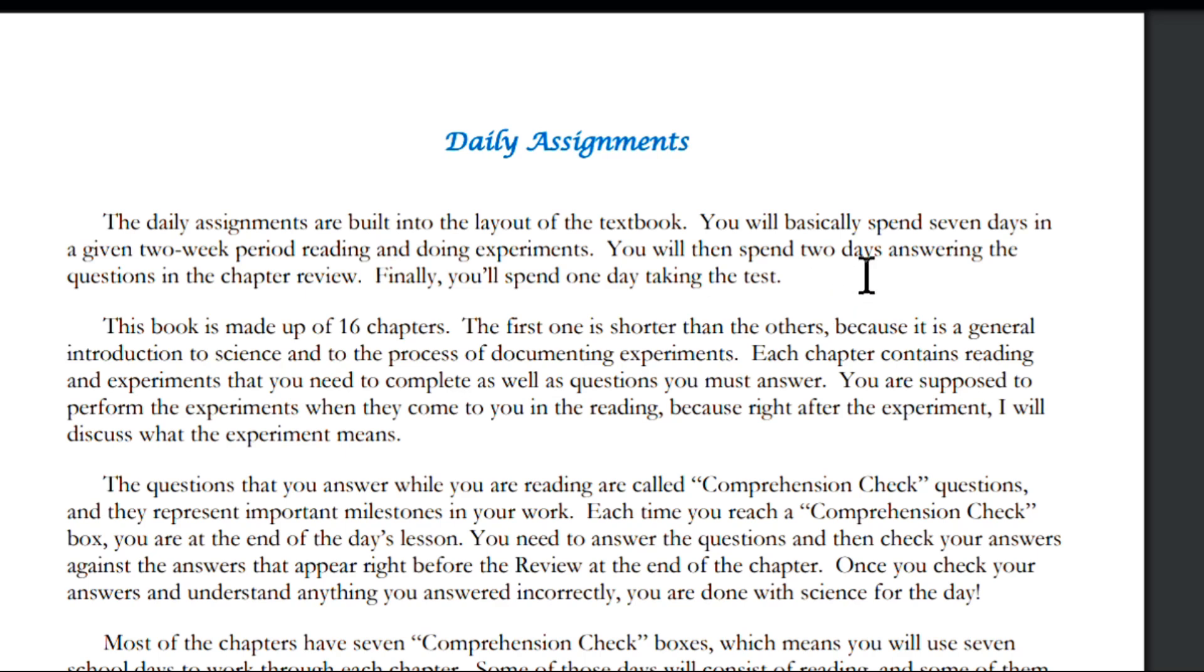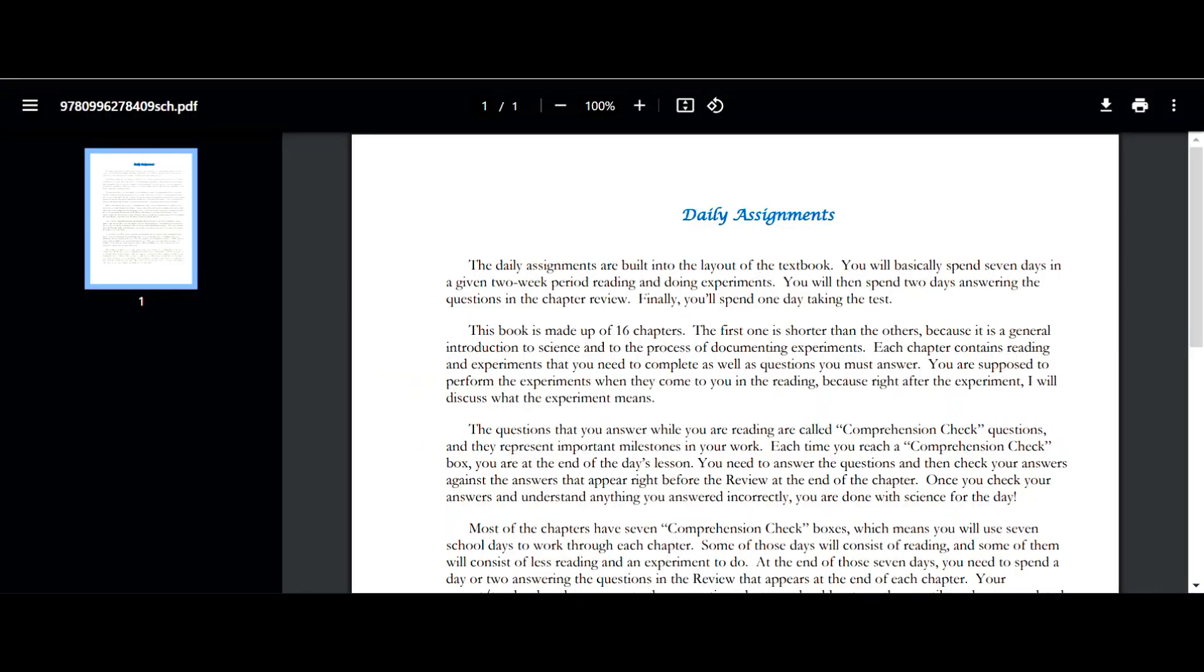So it is laid out to be 10 days per chapter. This book is made up of 16 chapters. The first one is shorter than the others because it is a general introduction to science and to the process of documenting experiments. Each chapter contains reading and experiments that you need to complete as well as questions you must answer. You are supposed to perform the experiments when they come to you in the reading, because right after the experiment, I will discuss what the experiment means.